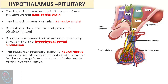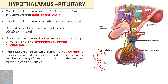Starting with the hypothalamus and pituitary glands: they are located at the base of the brain. The hypothalamus contains 11 major nuclei and controls the anterior and posterior pituitary glands. It sends hormones to the anterior pituitary through the hypophysial portal circulation. The posterior pituitary gland is a neural tissue consisting of axon terminals arising from the periventricular nucleus and supraoptic nucleus. Hormones are formed in the hypothalamus and stored in the posterior pituitary gland, which releases but does not synthesize hormones.